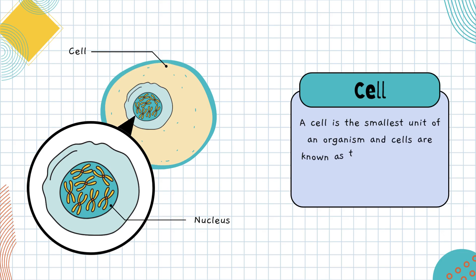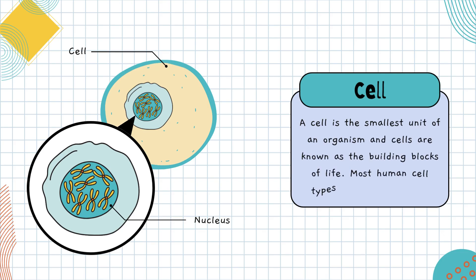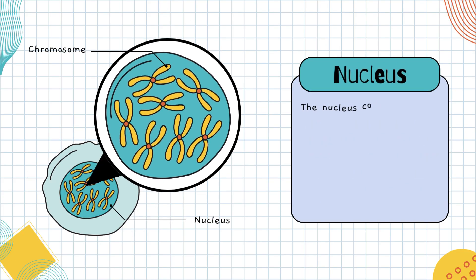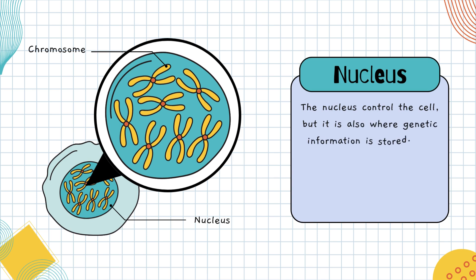A cell is the smallest unit of an organism, and cells are known as the building blocks of life. Most human cell types contain a nucleus. The part where the chromosomes lie is the nucleus. The nucleus controls the cell, but it is also where genetic information is stored.